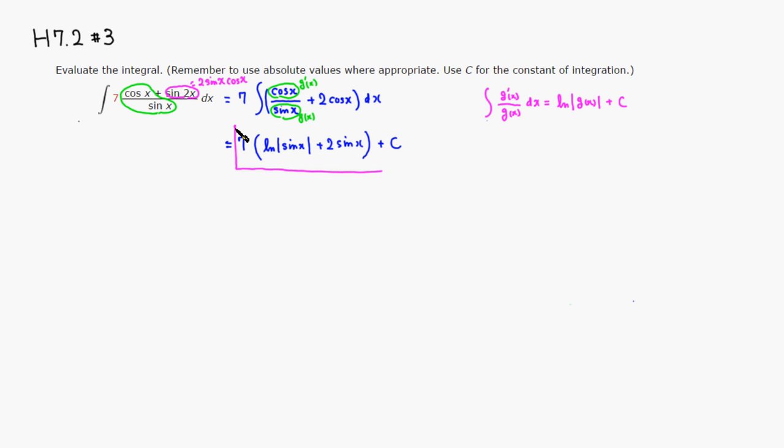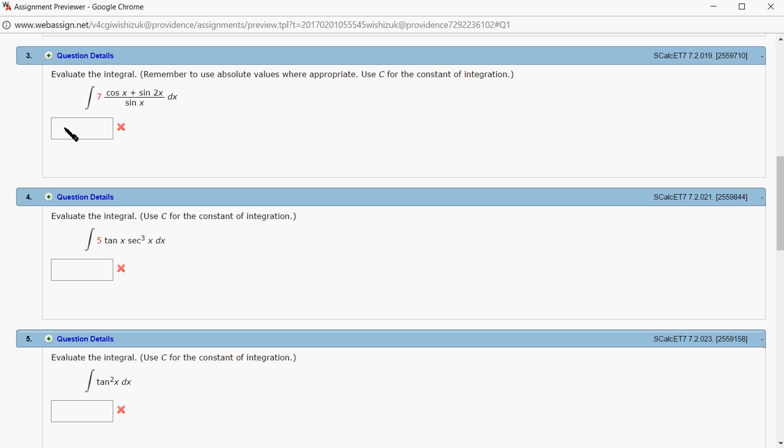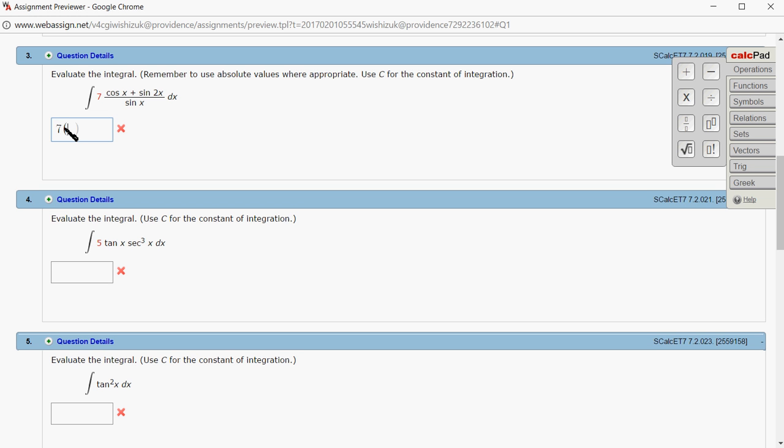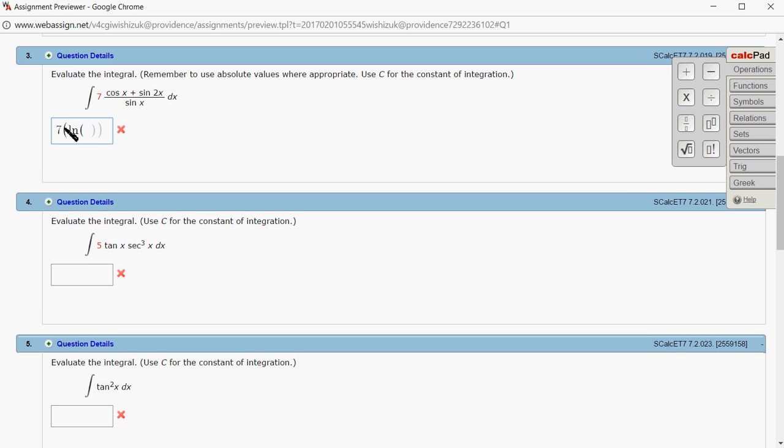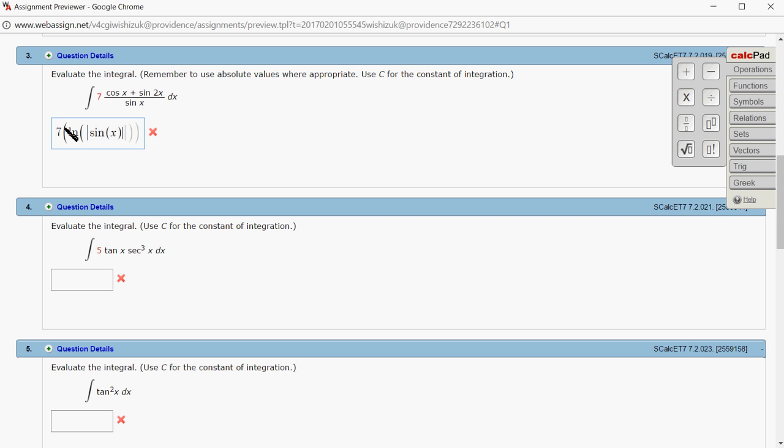We did not need any substitution on this guy. So let's type it in. We got 7 times natural log of absolute value of sine of x, and plus...